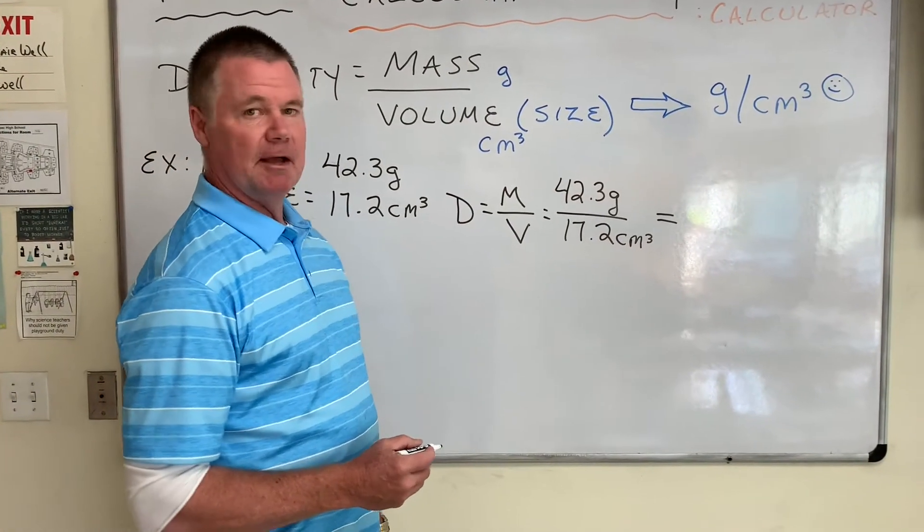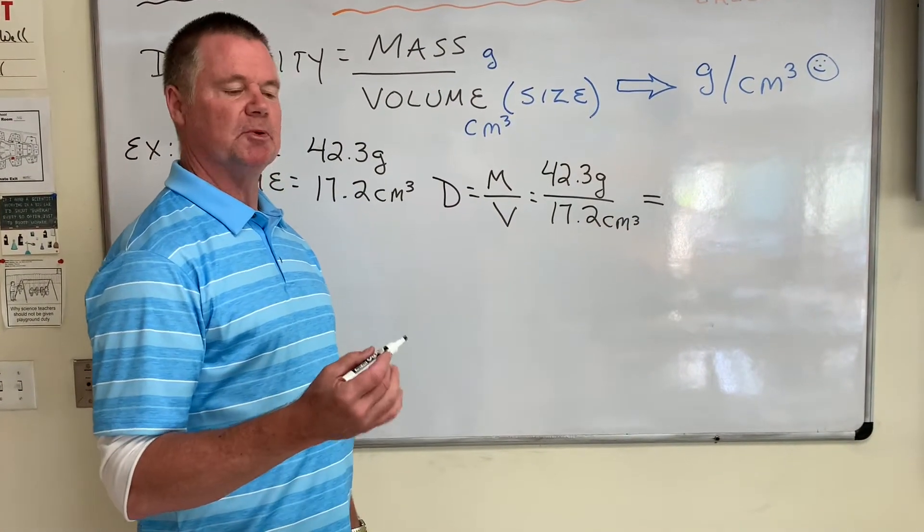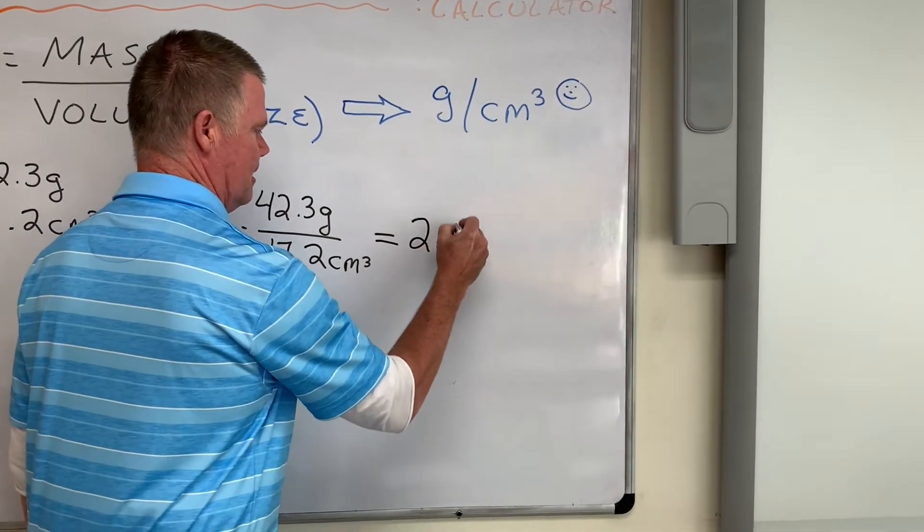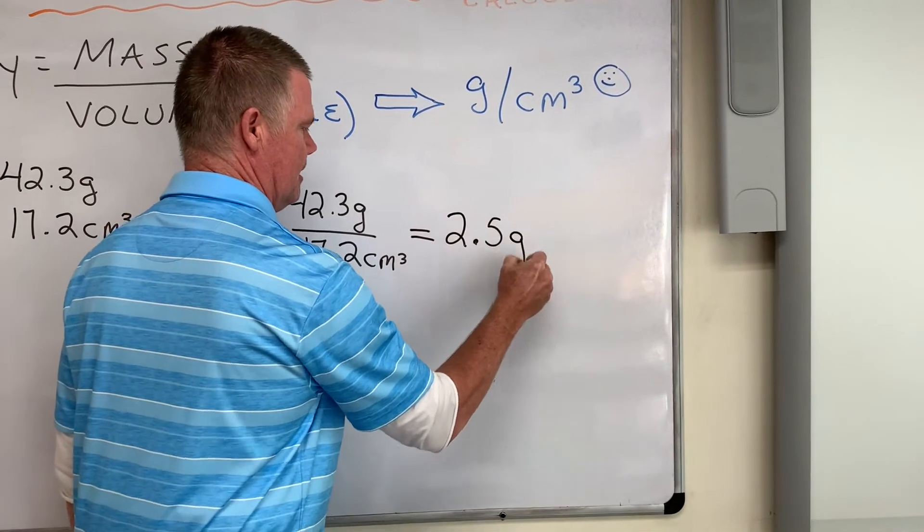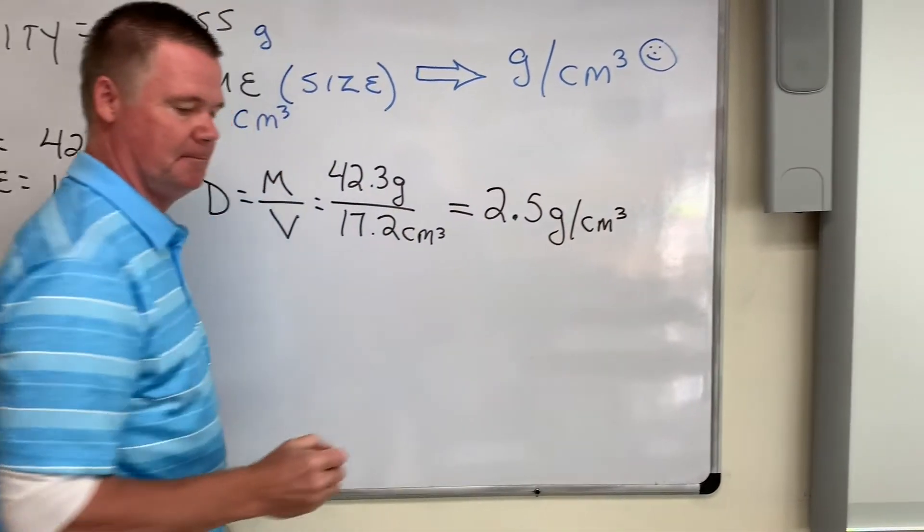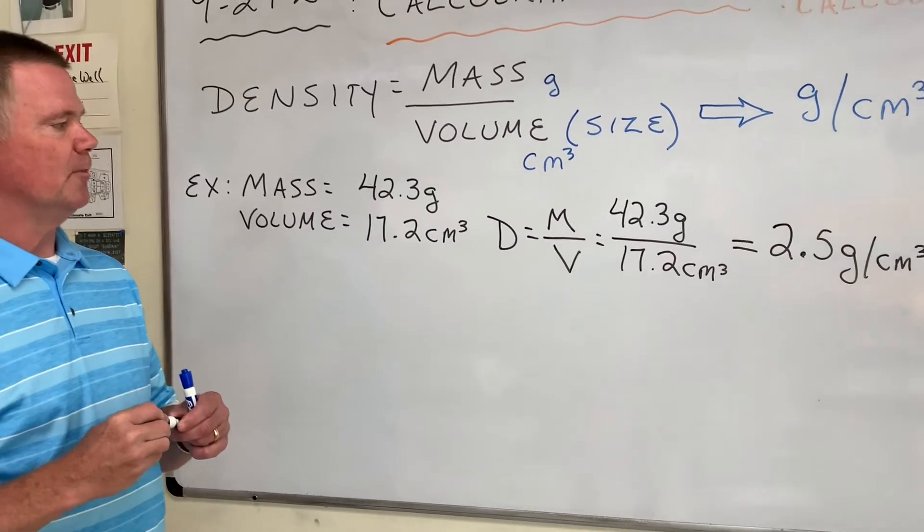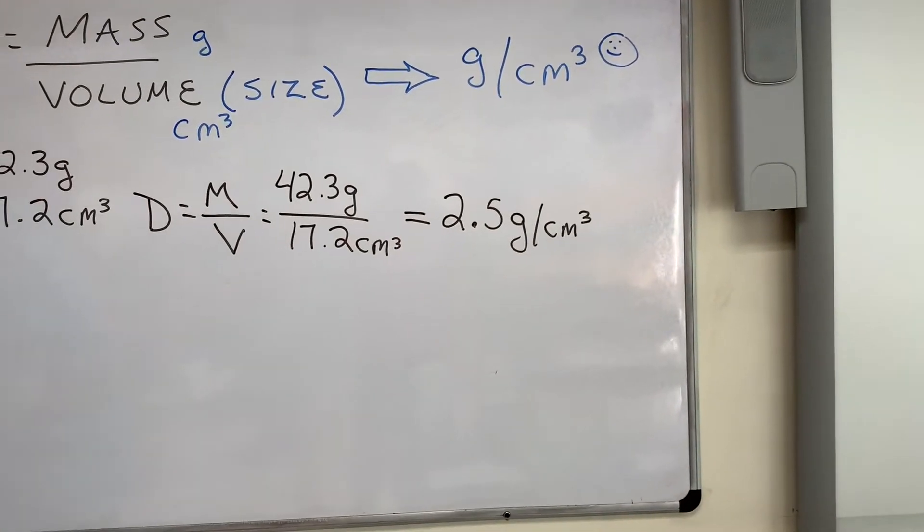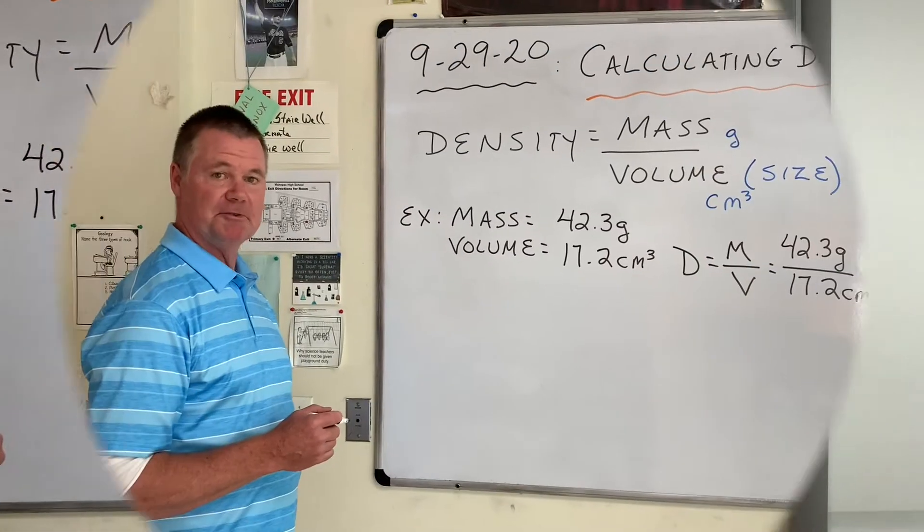Whenever we do calculations like this, one decimal place will do the trick for us. By rounding to one decimal point, you come up with a density of this object of 2.5 grams per cubic centimeter. Let's try another example.